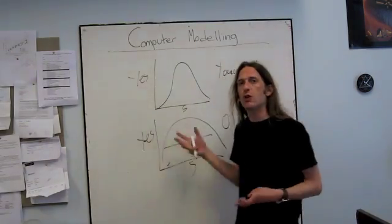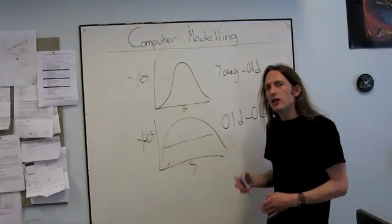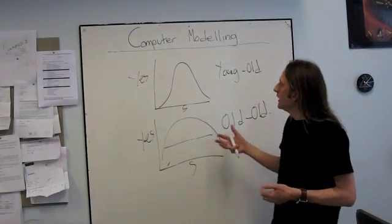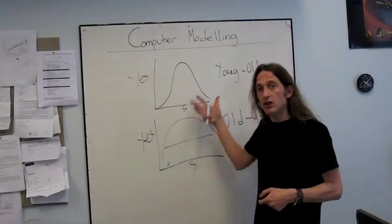Now if we just stopped there with our data analysis, then we can't really conclude an awful lot. All we can really conclude is that the old-old people are more variable in their timing than the young-old people.